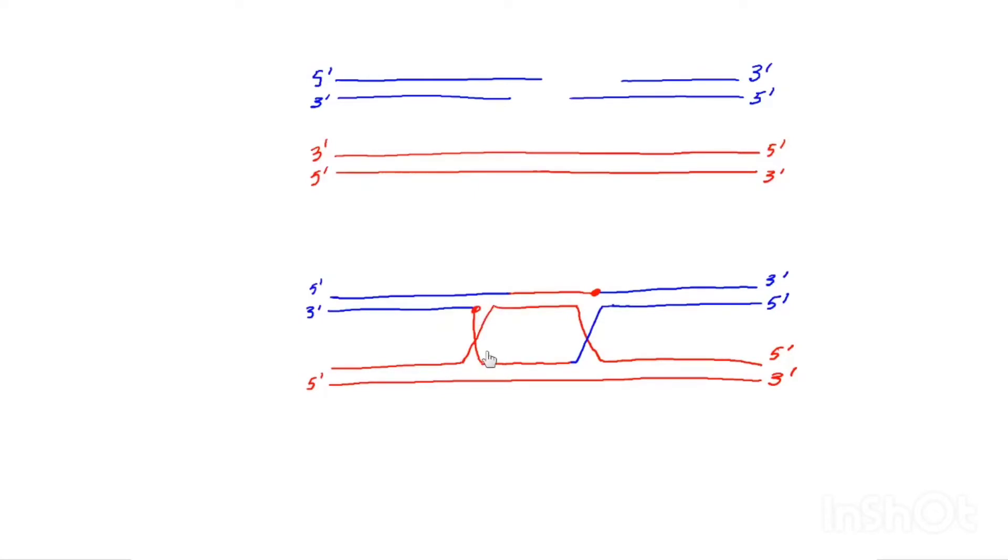And now what you have here is the formation of two holiday junctions. And these holiday junctions then need to be resolved.